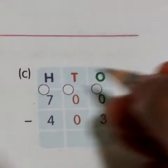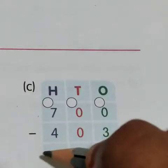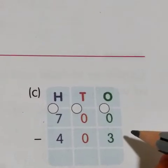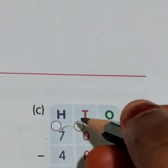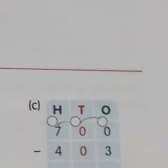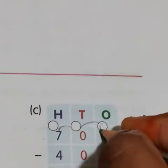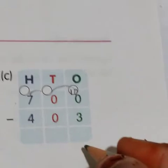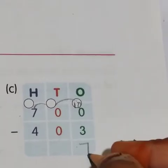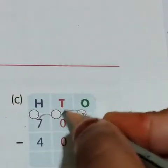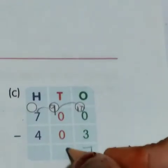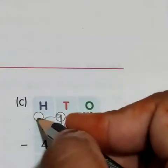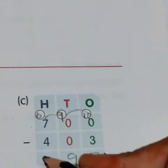Now let us do part C: 700 minus 403. So, 0 minus 3 we cannot do, so we have to take borrow. This will become 10. 10 minus 3 is 7. After giving the borrow, this will become 9. 9 minus 0 is 9. And this will become 6. 6 minus 4 is 2.